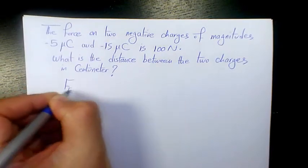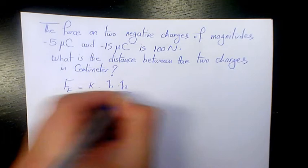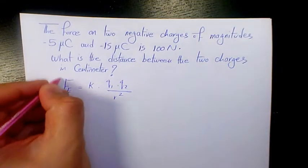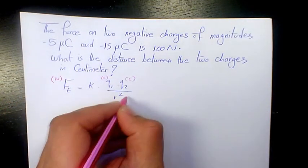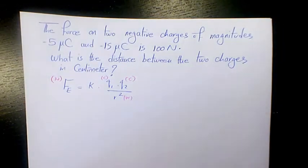Fe equals K times Q1 times Q2 divided by R squared. The unit for F is Newton, the unit for Q is Coulomb, and this one is going to be in meters.